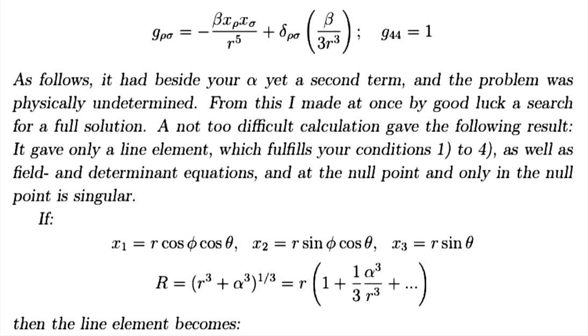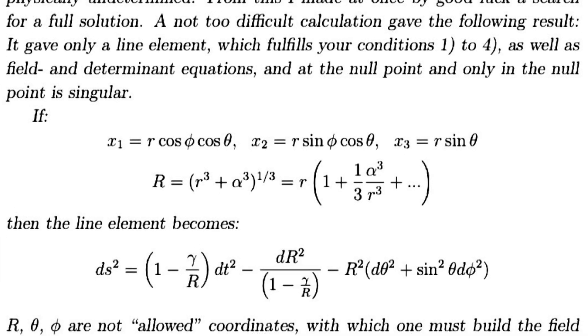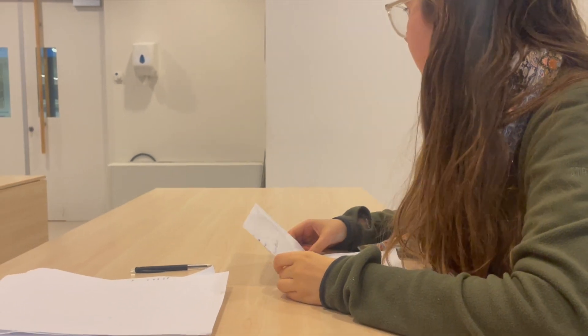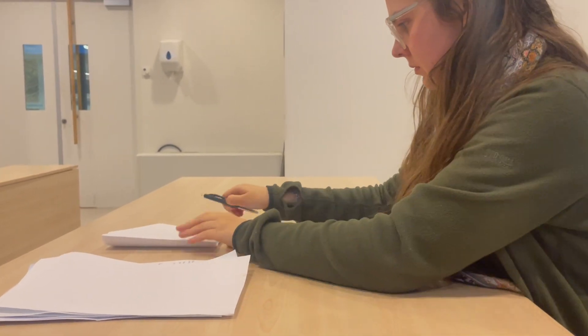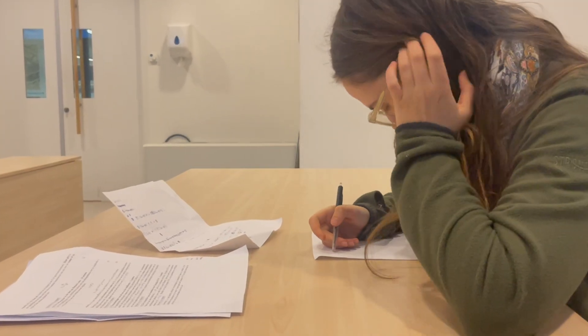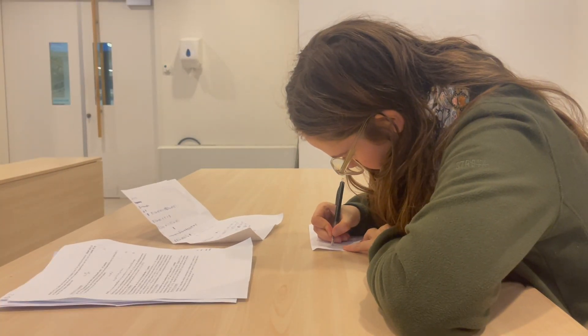It's burnt at the edges, but inside lies an exact solution of your equations, perfectly describing how a star deforms space and time. After composing yourself, you start writing a reply, expressing your admiration and your wish to present it to the academy. Unbeknownst to you, the man you're writing to will pass away in the next few months. His name was Karl Schwarzschild.